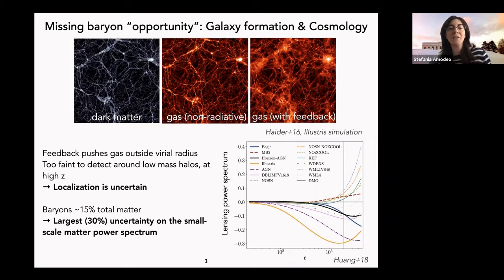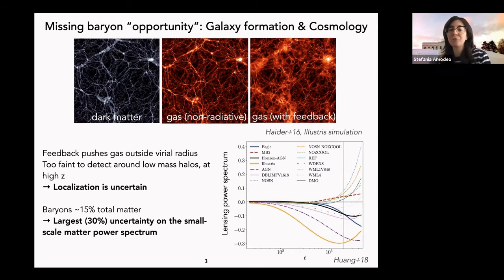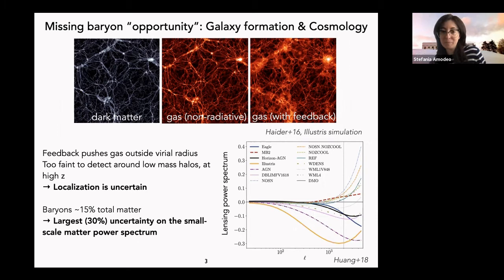When the gas is pushed outside, it becomes fainter and harder to detect, especially for lower mass halos and at high redshift. So we look for means to localize this gas, because baryonic physics is a large uncertainty in the matter power spectrum on small scales. The bottom plot shows a collection of different simulations where baryonic physics is implemented in different ways, and the scatter between these curves gives an idea of the uncertainties related to the matter power spectrum.